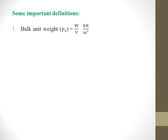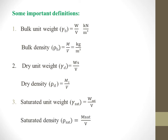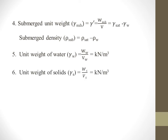Some important definitions: Bulk unit weight is weight by volume, in kilonewtons per meter cube. Density is mass by volume in kilograms per meter cube. Similarly, dry unit weight is WS / V, and dry density is MS / V. Saturated unit weight, gamma_sat, equals saturated weight by volume; saturated density is saturated mass by volume. Submerged unit weight, also denoted gamma dash, equals gamma_sat minus gamma_W. Submerged density rho_sub equals rho_sat minus rho_W. Unit weight of water is weight of water by volume of water, and unit weight of solids is weight of solids by volume of solids.